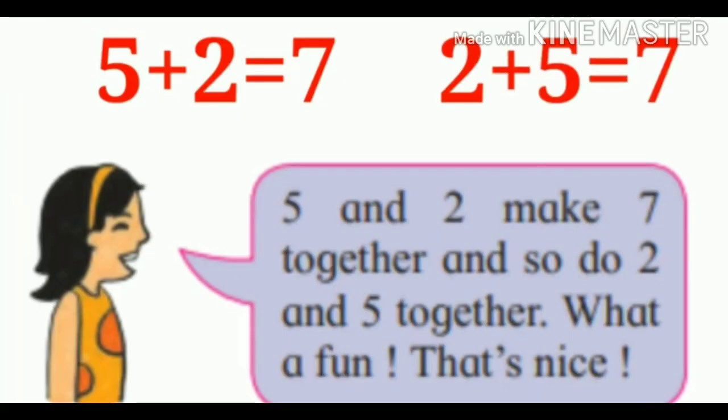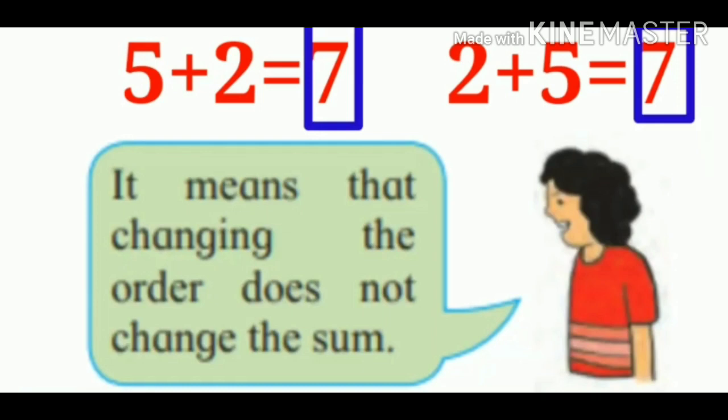Children, 5 and 2 make 7 together and so do 2 and 5 together. What a fun, isn't it? That's nice. 5 plus 2 is equal to 7 and then we change the order. Here, what will we get 2 plus 5 is equal to 7. It means that changing the order does not change the sum.